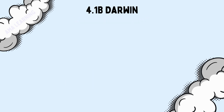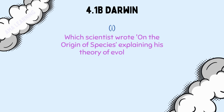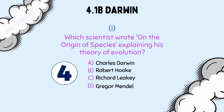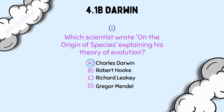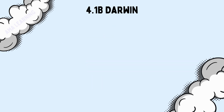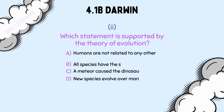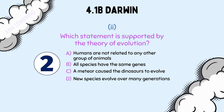Let's try a few multiple choice questions to make sure we have understood the key terms. I will show you a question, read it out, and then reveal the answer after five seconds — pause the video if that isn't long enough. The first question asks which scientist wrote On the Origin of Species explaining his theory of evolution. The correct answer is A: Charles Darwin. The second question asks which statement is supported by the theory of evolution. The correct answer is D: new species evolve over many generations.